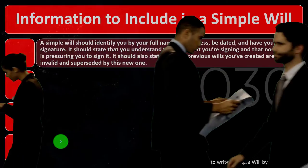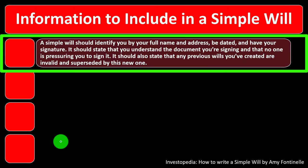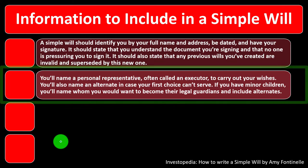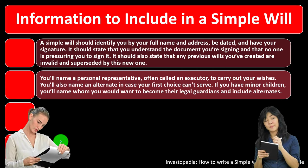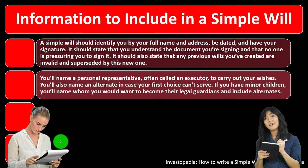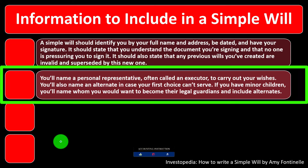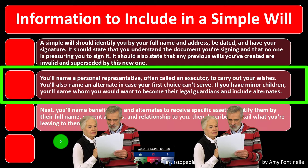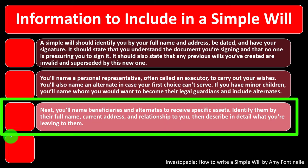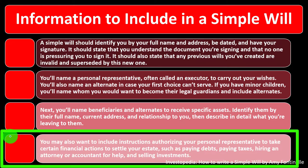The will should state that any previous wills you've created are invalid and superseded by this new one — ensuring that if multiple documents conflict, the most recent one takes precedence. You'll name a personal representative, often called an executor, who will carry out the will's instructions to the best of their ability. You should also name an alternative in case your first choice can't serve, and if you have minor children, you'll name who you want to become their legal guardians, with alternates.